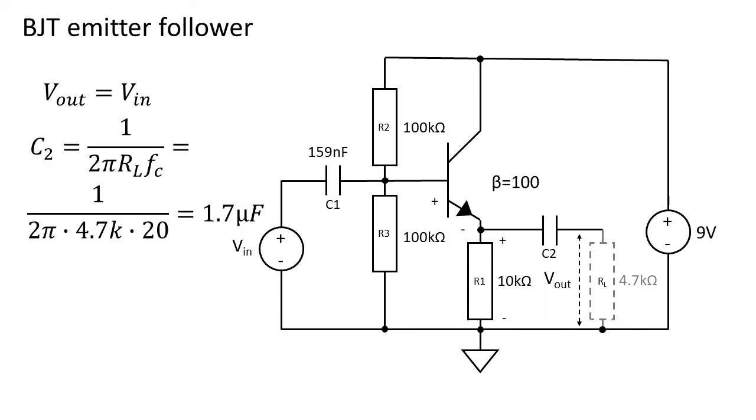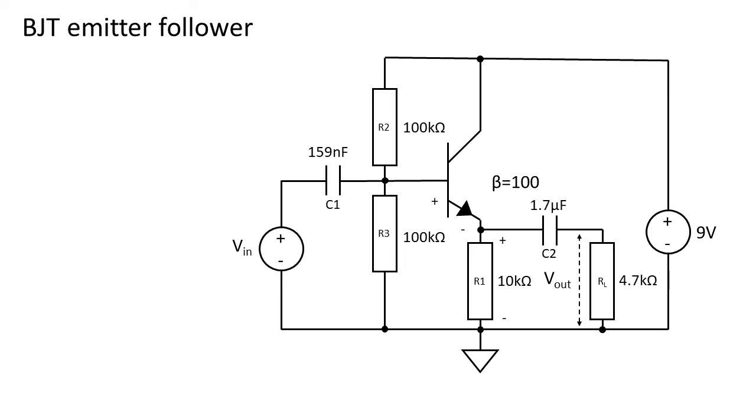Now we can choose a value for C2. Using the formula to calculate the capacitor value again gives us a capacity of about 1.7 microfarads. Now we calculated everything there is and our circuit is ready to use.